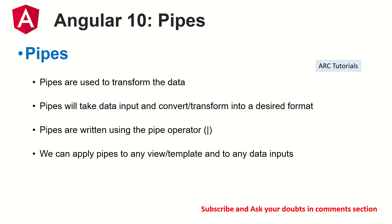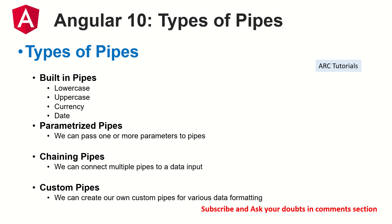Pipes are written using the pipe operator, which is a single vertical line. We can apply pipes to any view or template. We can use any number of pipes in a template — parameterized pipes, chained pipes, built-in pipes, or custom pipes. Any number of pipes are allowed in a template.